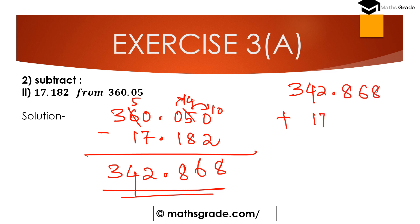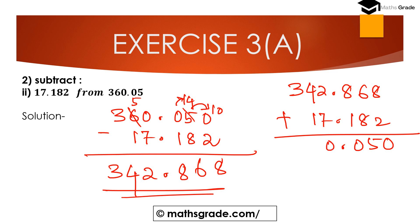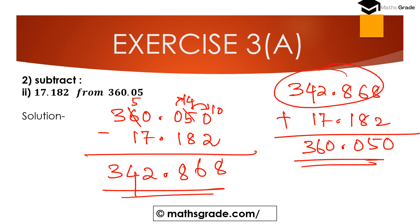To verify, add 342.868 with 17.182. 8 plus 2 is 10, carry 1. 6 plus 1 is 7, 7 plus 8 is 15, carry 1. 9 plus 1 is 10, carry 1. 2 plus 1 is 3, 3 plus 7 is 10, carry 1. 4 plus 1 is 5, 5 plus 1 is 6. And 3. Result is 360.050. This is correct. So subtracting 17.182 from 360.05 is 342.868.